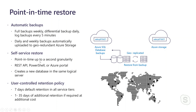We have REST API, PowerShell, and the Azure portal available for point-in-time restore. Point-in-time restore creates a new database on the same server — we do that because we do not want to change anything in the existing database that is running. We create a new database, and if customers want to point their workload to the newly restored database, they can do that. We have a user-controlled retention policy. By default, each database has seven days of retention period, but users can configure the retention period from anywhere from one to 35 days. For a dev/test database you can set it to one day, but for a production database you can configure it to 35 days.